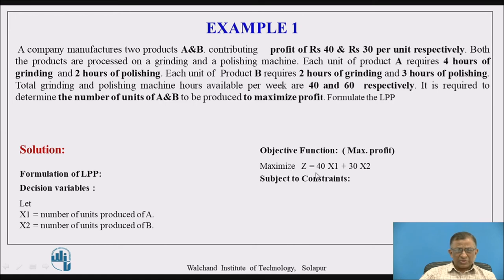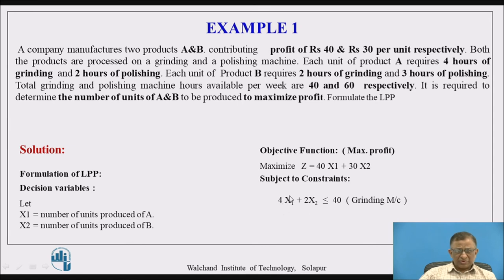The quantity X1 and X2 depends upon the constraints of utilization of the resources. Two resources provide two constraints imposed on the decision variables. The first constraint is the grinding machine, for which availability is only 40 hours per week — we can use equal to or less than 40 hours. The total time consumed by both products on the grinding machine is 4X1 (4 hours per unit for product A) plus 2X2 (2 hours per unit for product B), which must be less than or equal to 40.